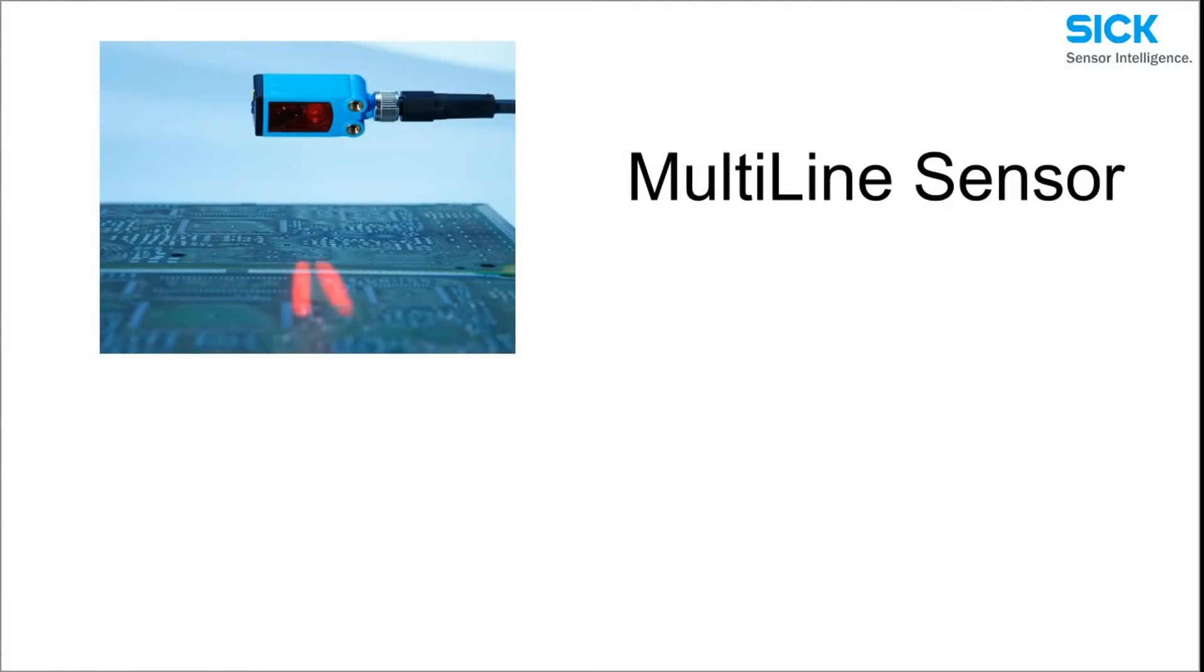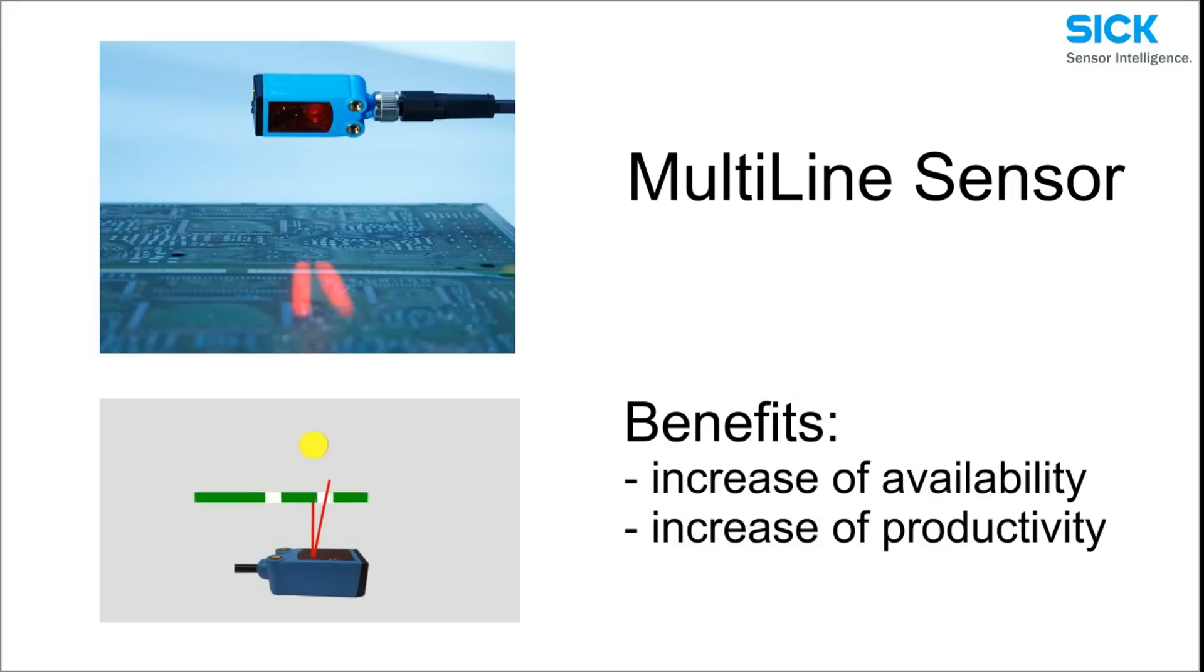The multi-line sensor is unique with two line-shaped light spots and special evaluation for stable and consistent detection of targets with holes or gaps.